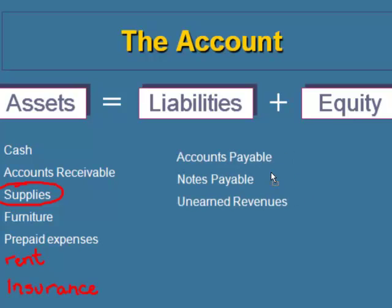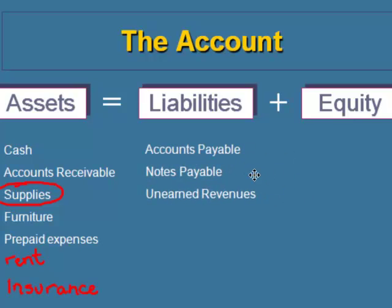Examples of liabilities are accounts payable, notes payable, and unearned revenues. From previous sessions, you'll recall that accounts payable are basically debts that arise when a company purchases merchandise, supplies, or equipment — usually something that has to be paid within 30 days. Notes payable is an example of a debt that arises when a company requires longer than 30 days to pay, such as borrowing money to purchase an automobile.